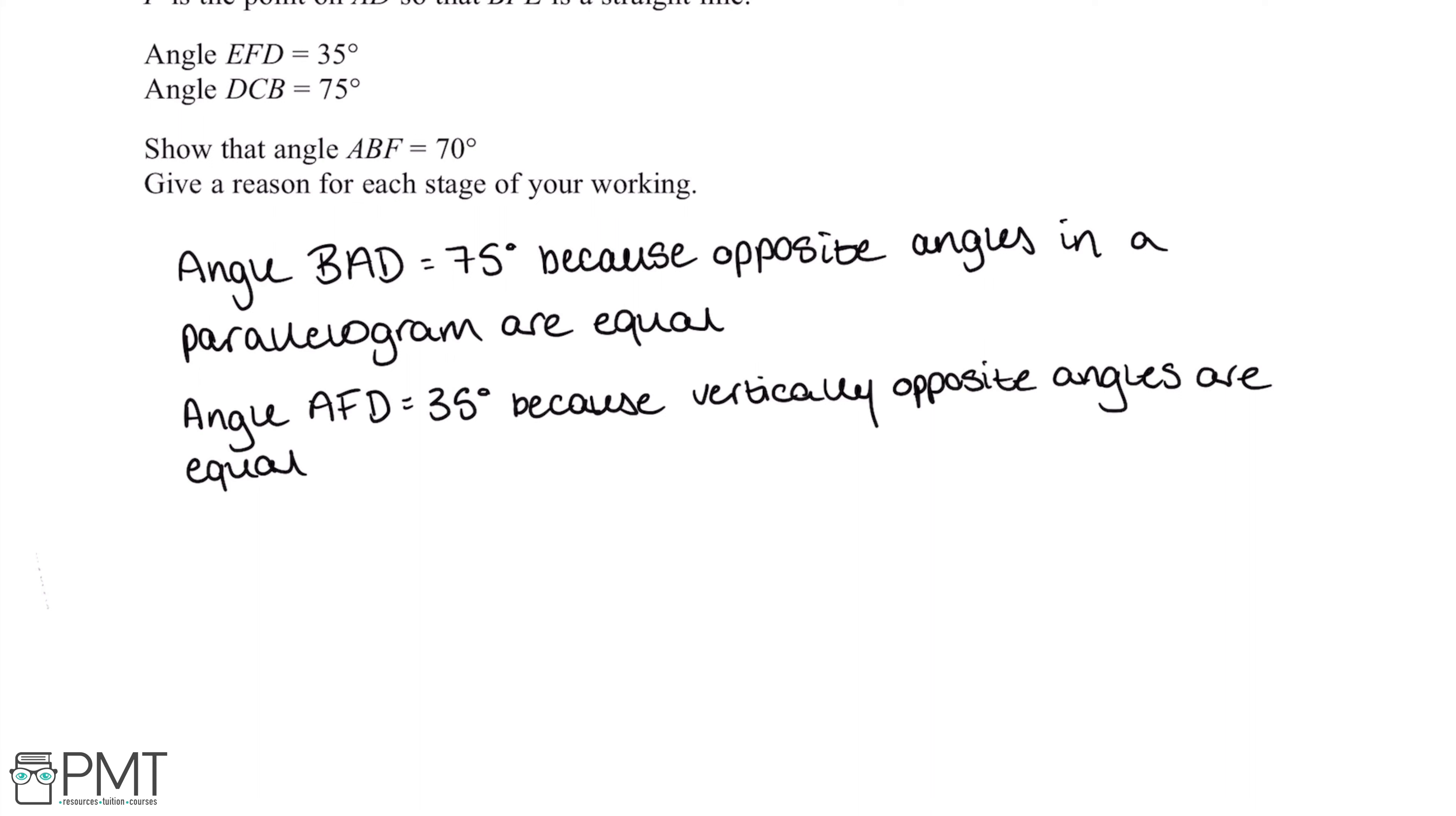So we want to work out 75 plus 35, which gives us 110, and then we want to minus this from 180. So 180 minus 110 is 70 degrees. This therefore proves that angle ABF is 70 degrees.